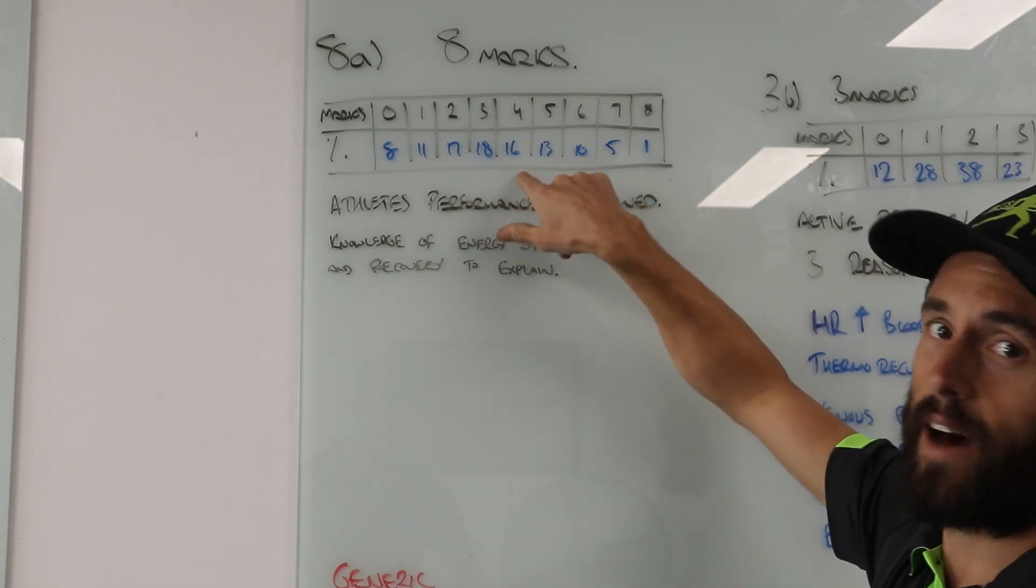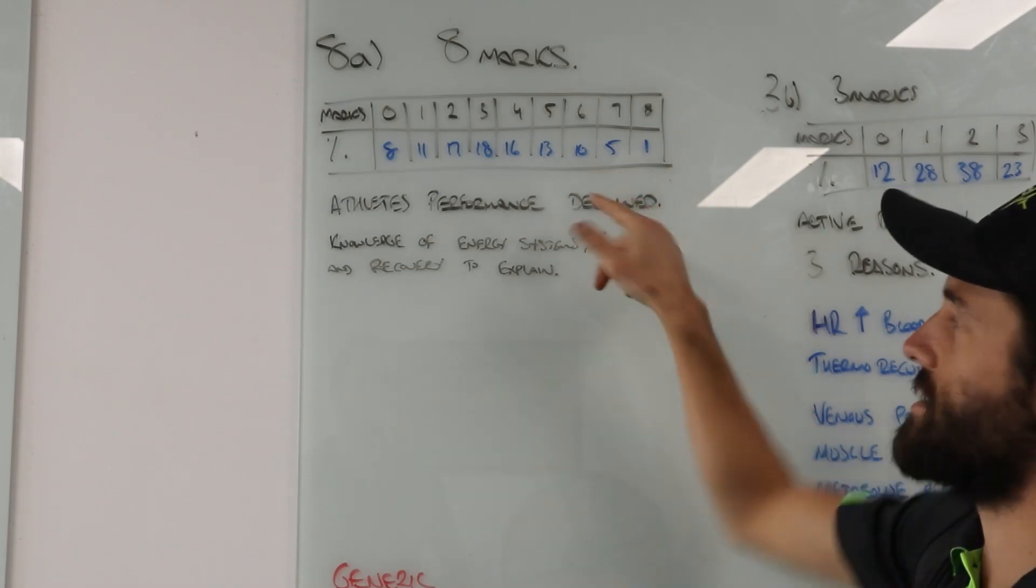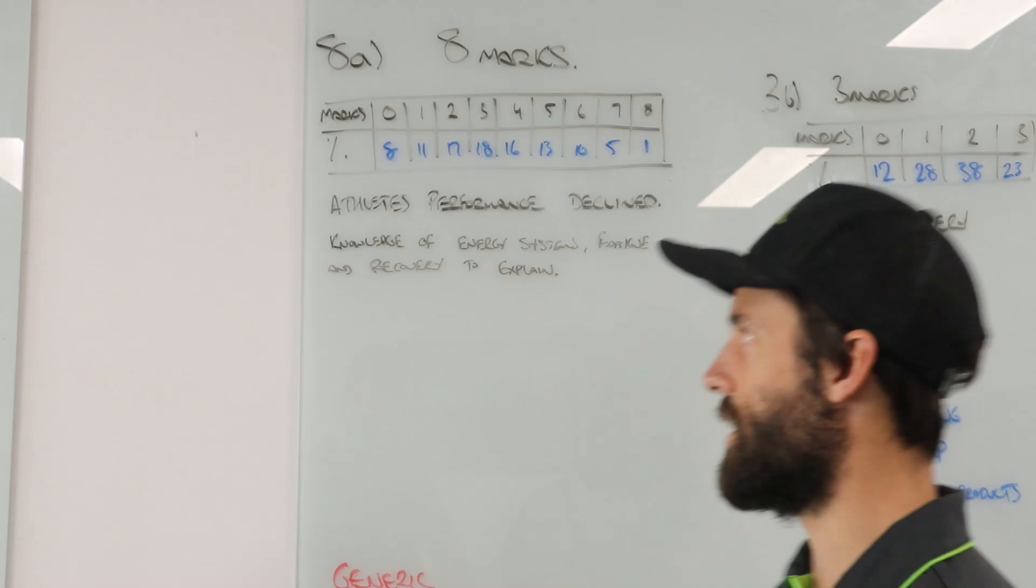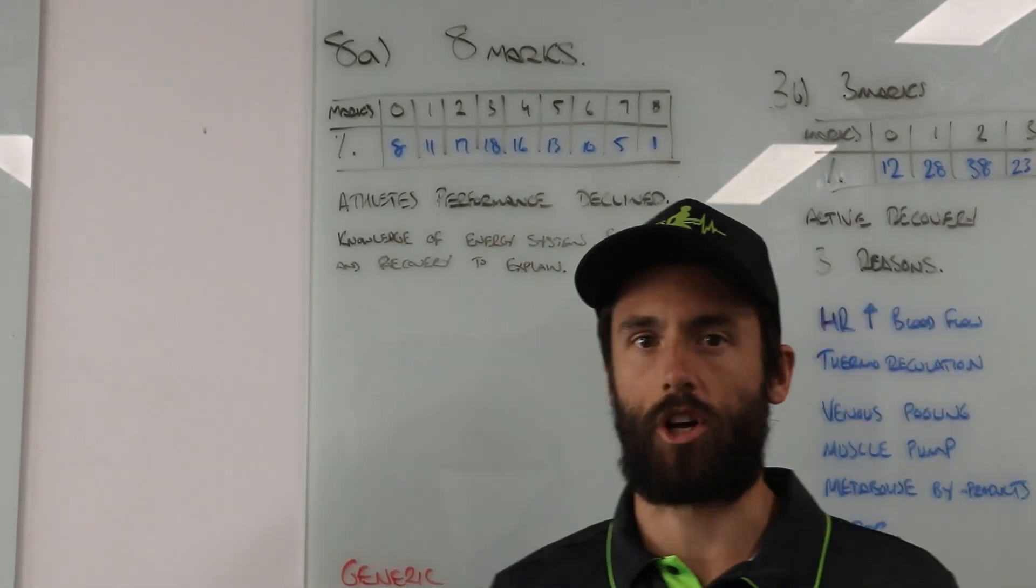Now I've put the marking rubric up, so 8% of the site got zero, you know people may have not turned up for the exam or not sat it. 1% got eight out of eight, so it's really the top end drops away, 5% got seven.